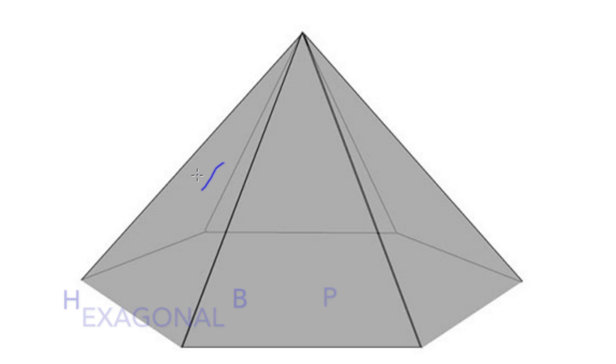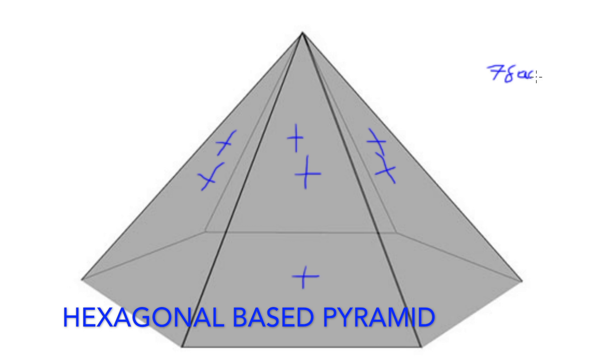Our next shape is a hexagonal base pyramid. We can see here it has 7 faces, that's 6 surrounding, and 1 on the base.